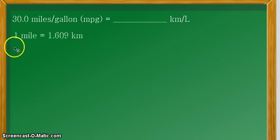Here, we have 1 mile is approximately equal to 1.609 kilometers. And the other equivalent statement that we need is 1 gallon is equal to 3.785 liters.